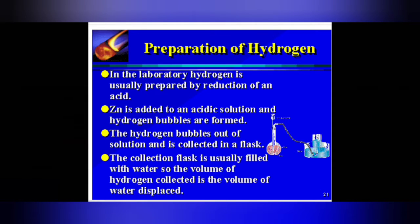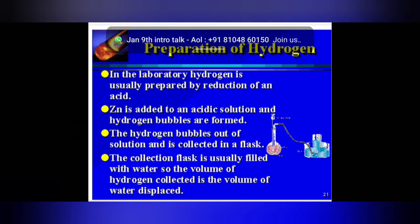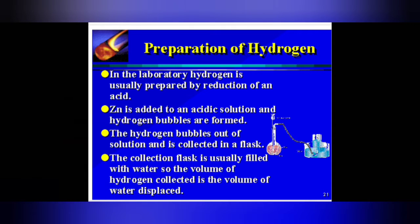For the preparation of hydrogen, the materials or reactants required for this reaction are granulated zinc and dilute sulfuric acid. Zinc granules are preferred for this reaction over pure zinc because the impurity present in granulated zinc is copper, whose catalyzing effect speeds up the rate of reaction.